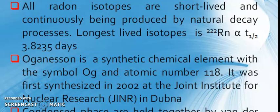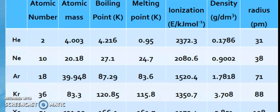You know condensed phases are held together by Van der Waals forces which increase smoothly down the group. Now, you know the atomic numbers are 2, 10, 18, 36, 54, and 118. You know atomic masses, boiling point you can see, melting point, first ionization, electronegativity, density, and atomic radius.